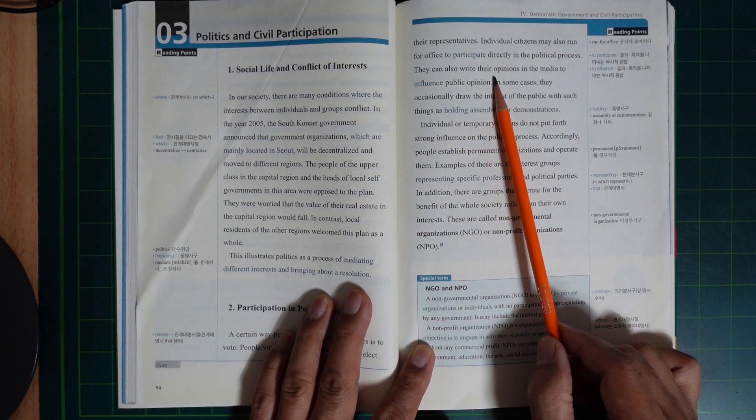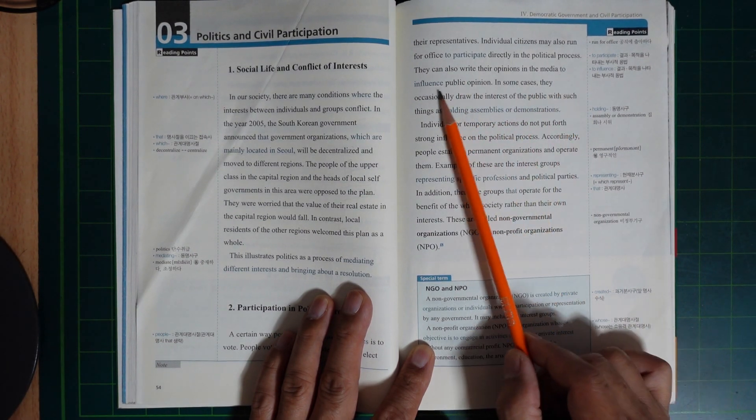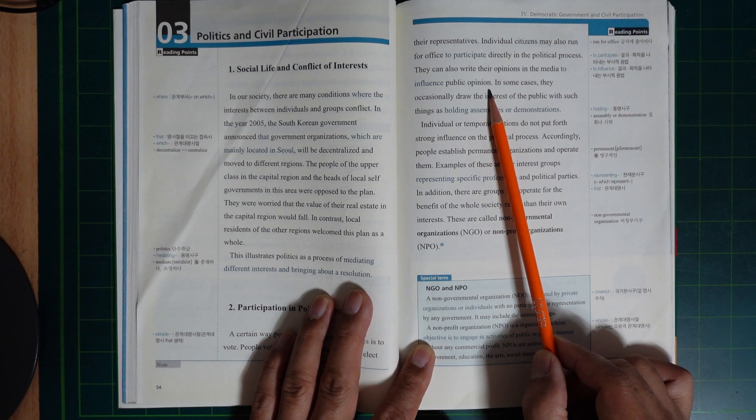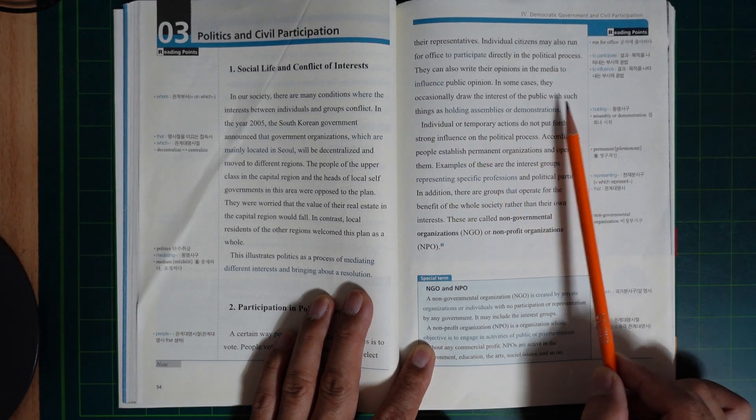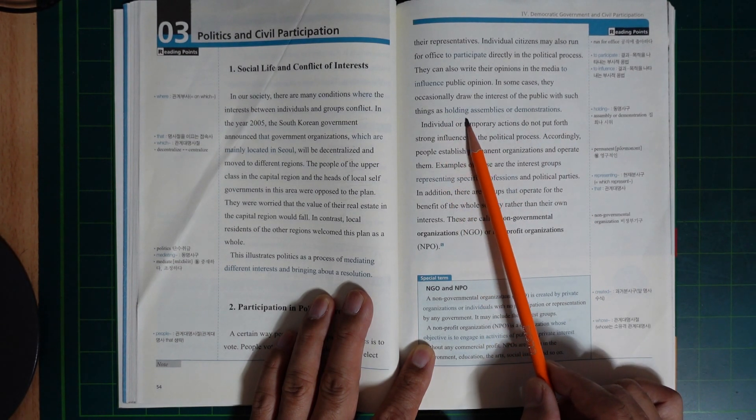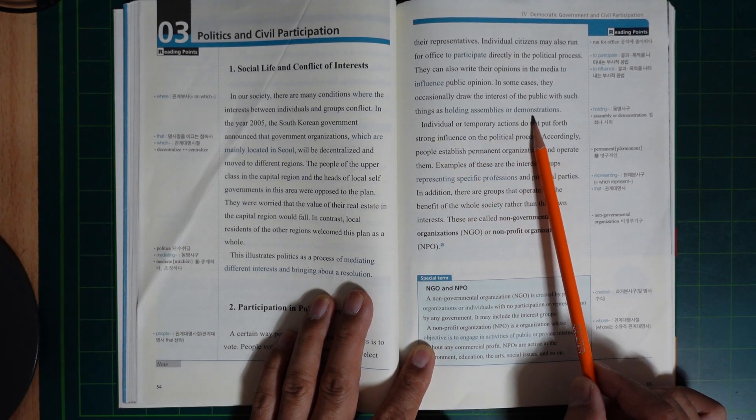Individual citizens may also run for office to participate directly in the political process. They can also write their opinions in the media to influence public opinion. In some cases, they occasionally draw the interest of the public with such things as holding assemblies or demonstrations.